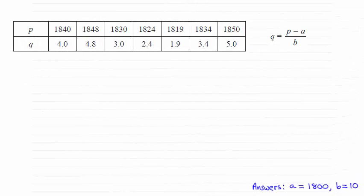Hi there. For this question we had to find the constants a and b when we use this coding here, q equals p minus a over b.